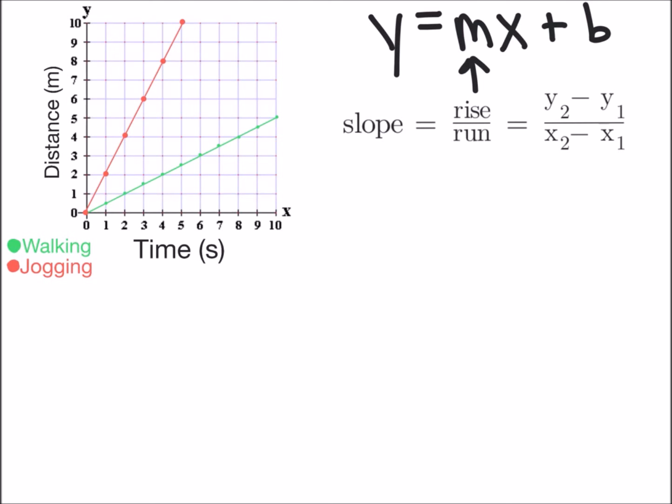I'm going to use slope equals rise over run because I think that's what most of us use, so I'm going to identify that slope equals the rise divided by the run and we're going to look at the walking data first.